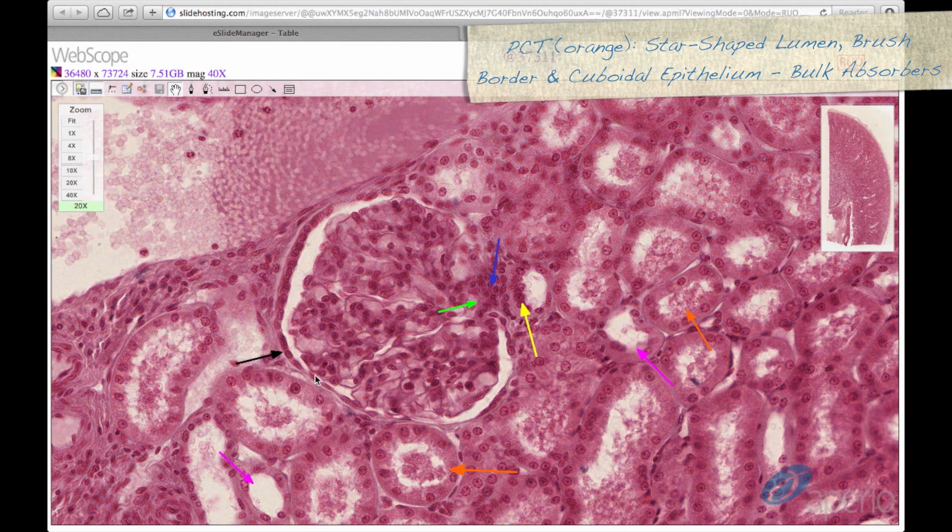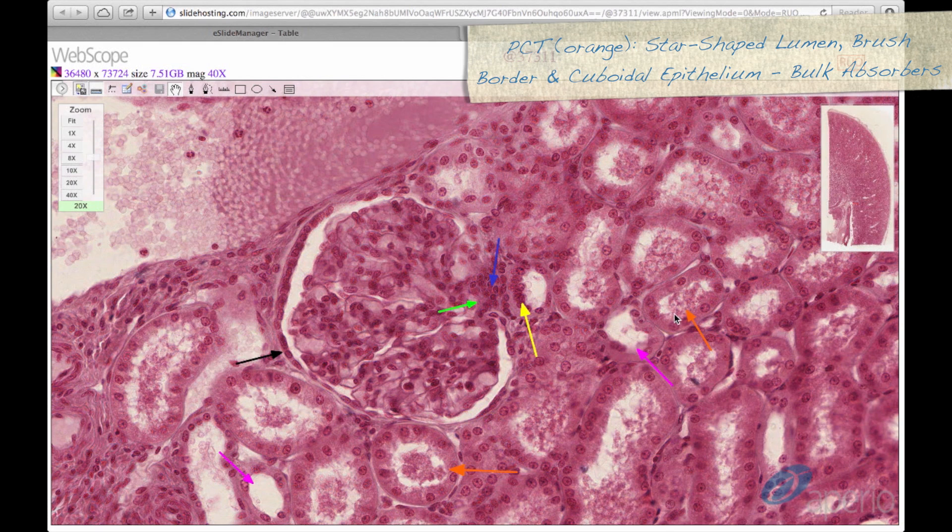Proximal convoluted tubules, seen here at the orange arrow, have a characteristic star-shaped lumen with a poorly preserved brush border and cuboidal epithelium. These are the bulk absorbers of the nephron.